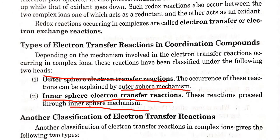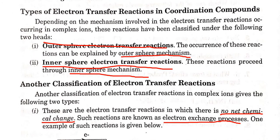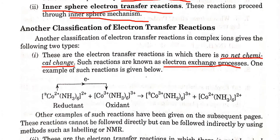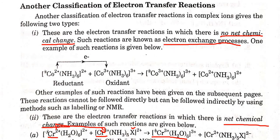These are called electron transfer reactions or electron exchange reactions. There are two types of electron transfer reactions: outer sphere electron transfer reactions and inner sphere electron transfer reactions. Outer sphere reactions are those whose mechanism can be explained by an outer sphere mechanism, and inner sphere reactions proceed through an inner sphere mechanism. This is the basic classification of electron transfer reactions.